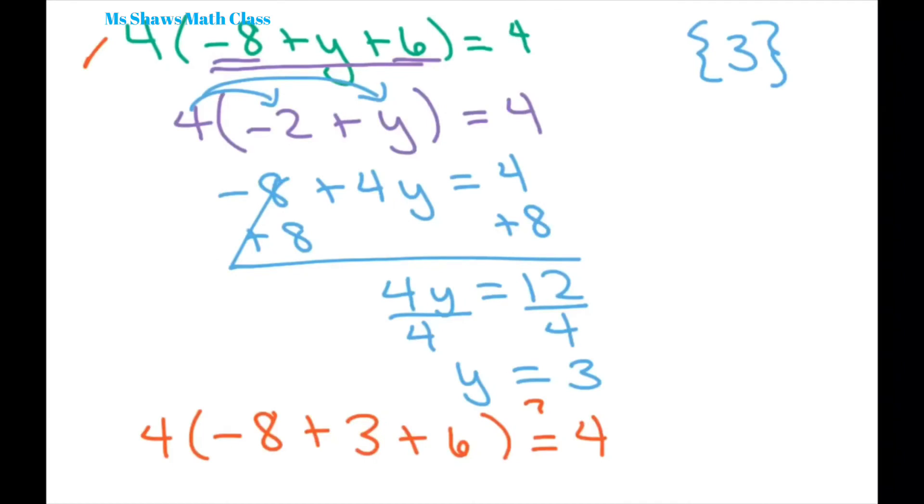So let's look at this. This is nine. So nine minus eight is one. So this whole quantity here is one. So we have four times one. Does that equal four? Yes. So we did it correctly.